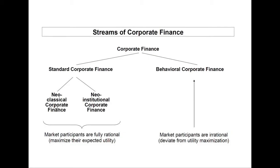Most of the basic models that have been derived in corporate finance are located within this group of models. This includes, for instance, the models set up by Franco Modigliani and Merton Miller that show, under rigid assumptions, the irrelevance of the capital structure and the irrelevance of the dividend policy. Also, the calculation of the cost of capital with the capital asset pricing model is derived within a neoclassical model setting.